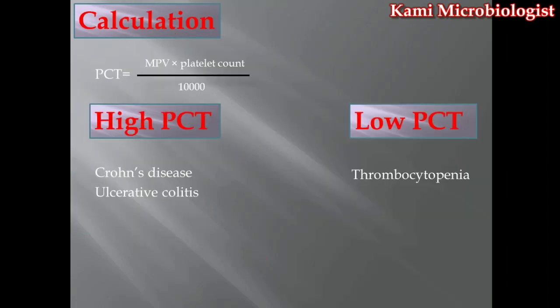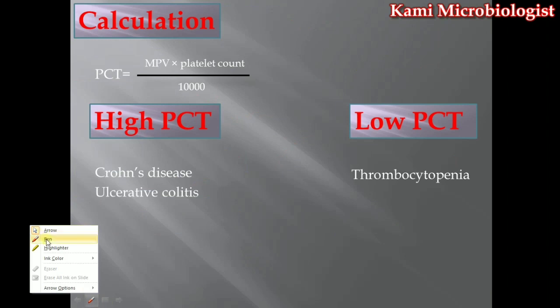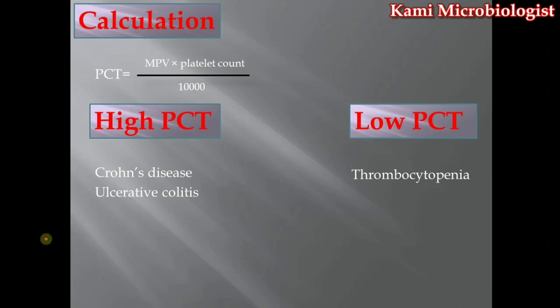If you do not have a hematology analyzer machine, you can also find out PCT manually using a formula: MCV multiplied by platelet count, divided by 10,000. We already covered MCV and platelet count in previous video lectures on this channel. Once you multiply those values and divide by 10,000, the answer you get is the PCT percentage.